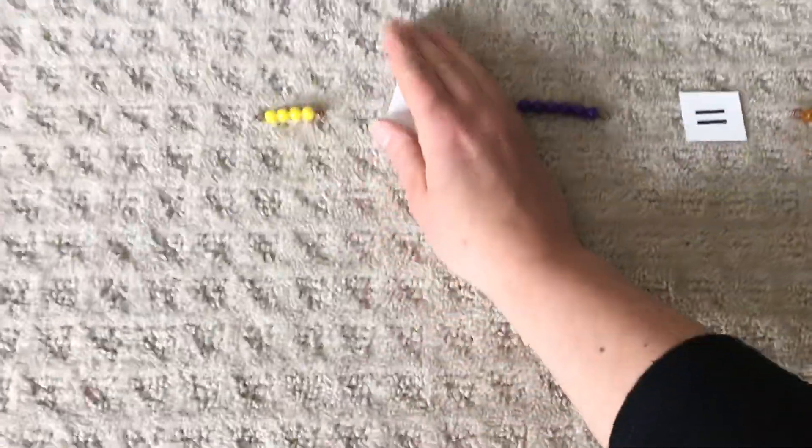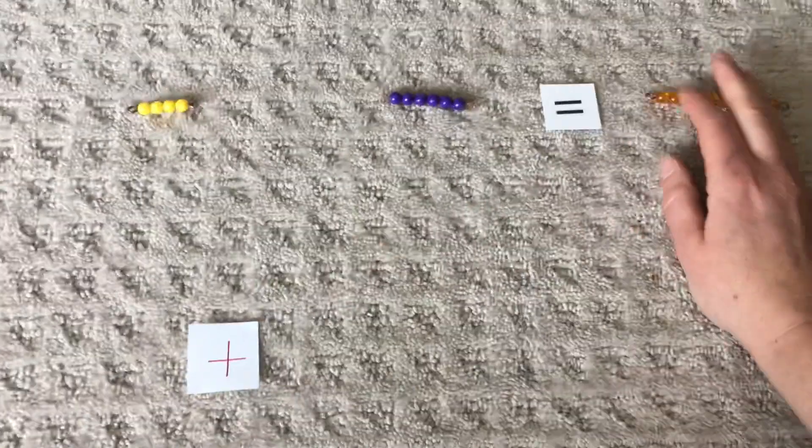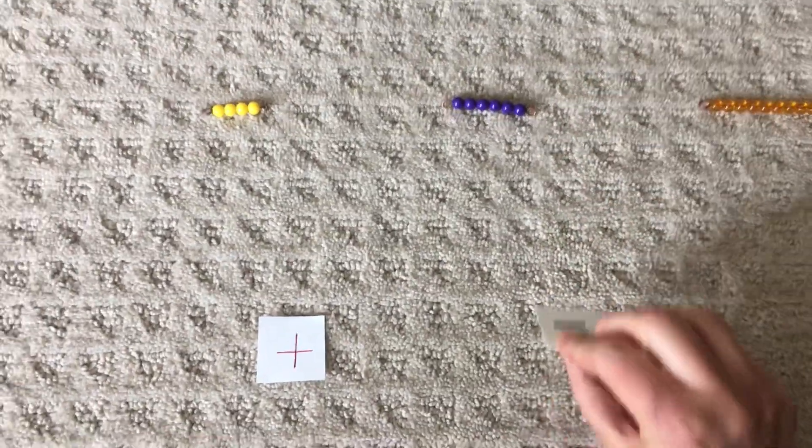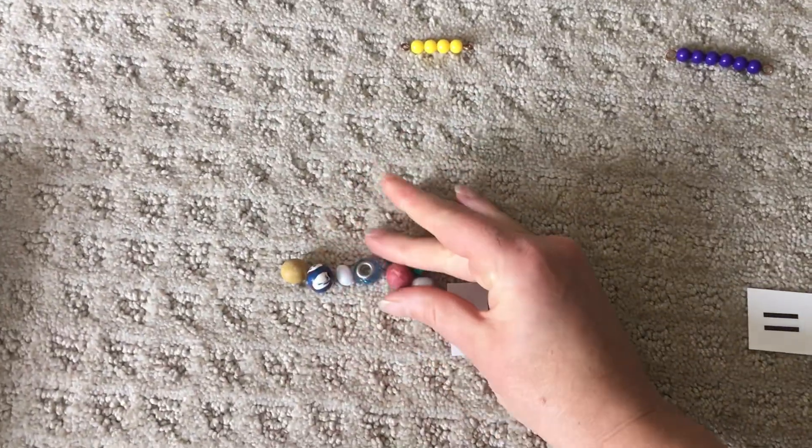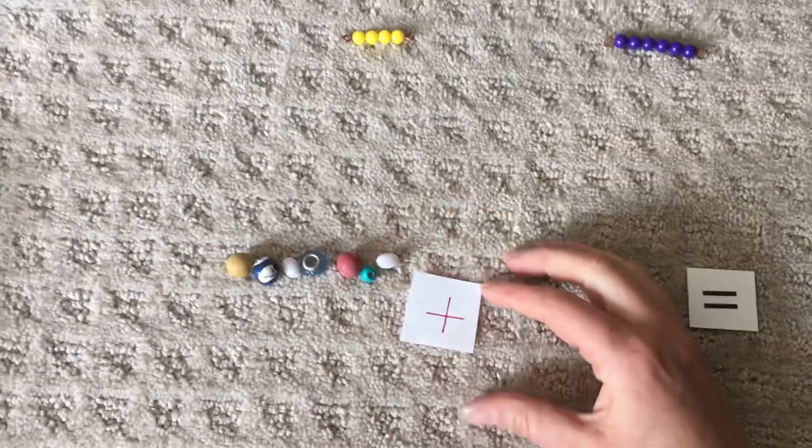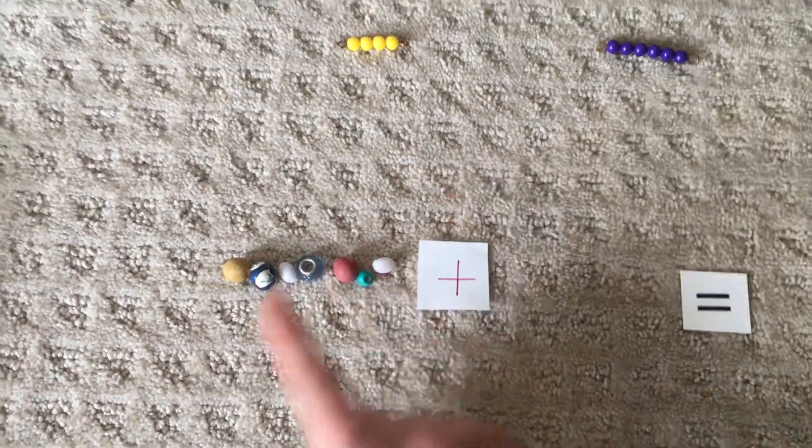So we're taking our plus sign down here, our equals sign here. Okay. And we'll come here and I'll just take maybe a handful. I don't even know how many there are. Let's find out. Okay. Let's see. We'll put them in a row so I don't mix up my counting. There we go.